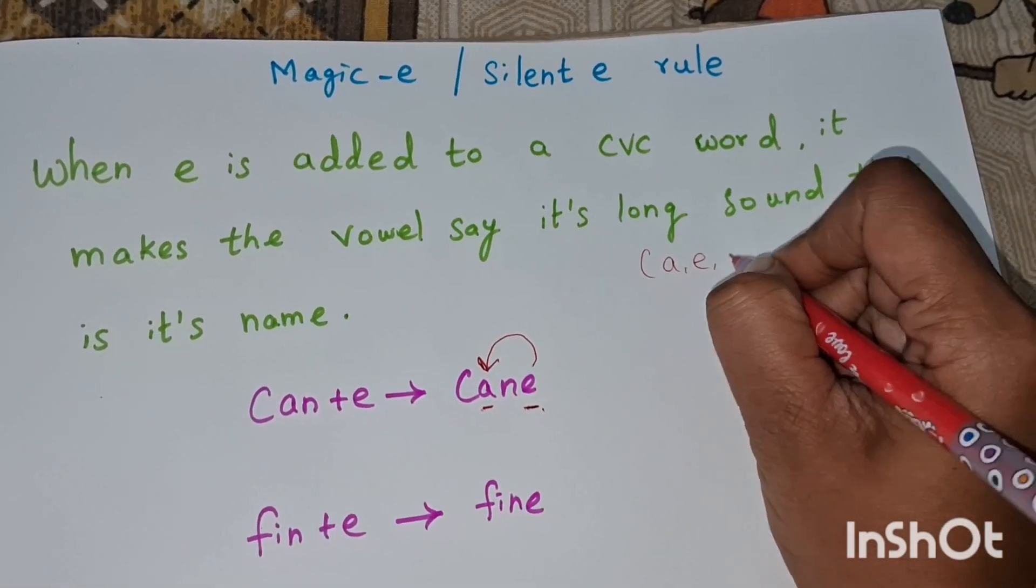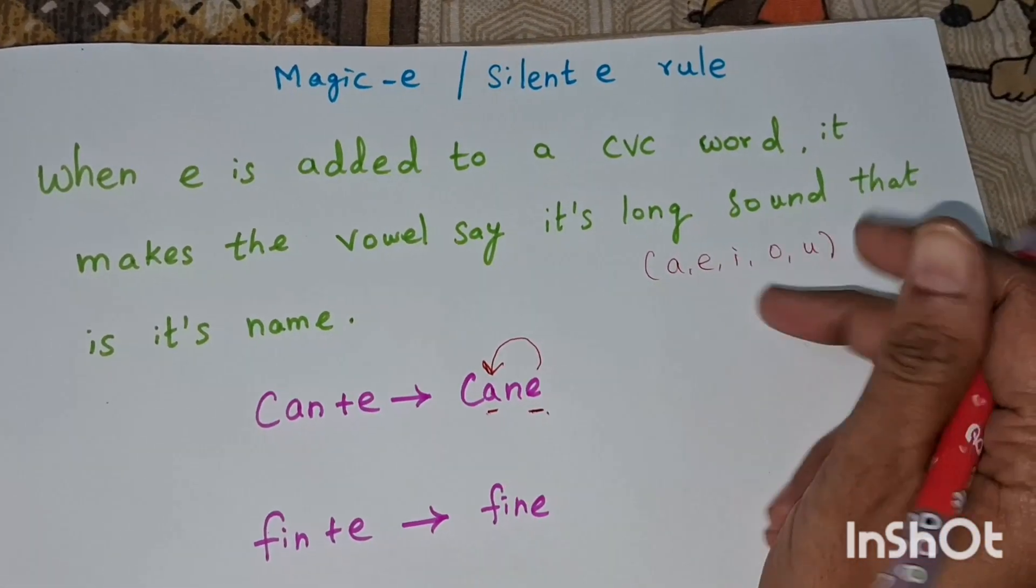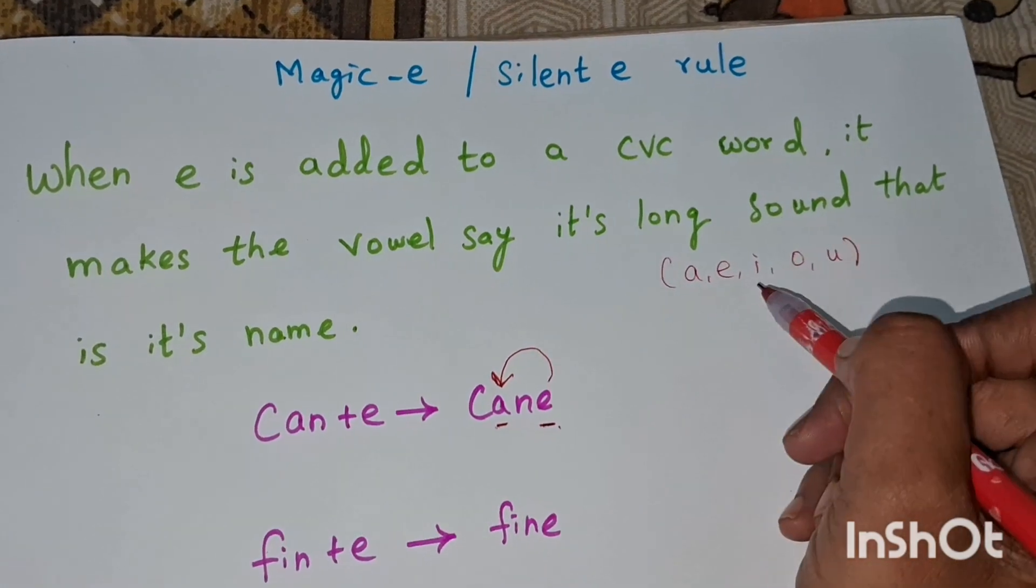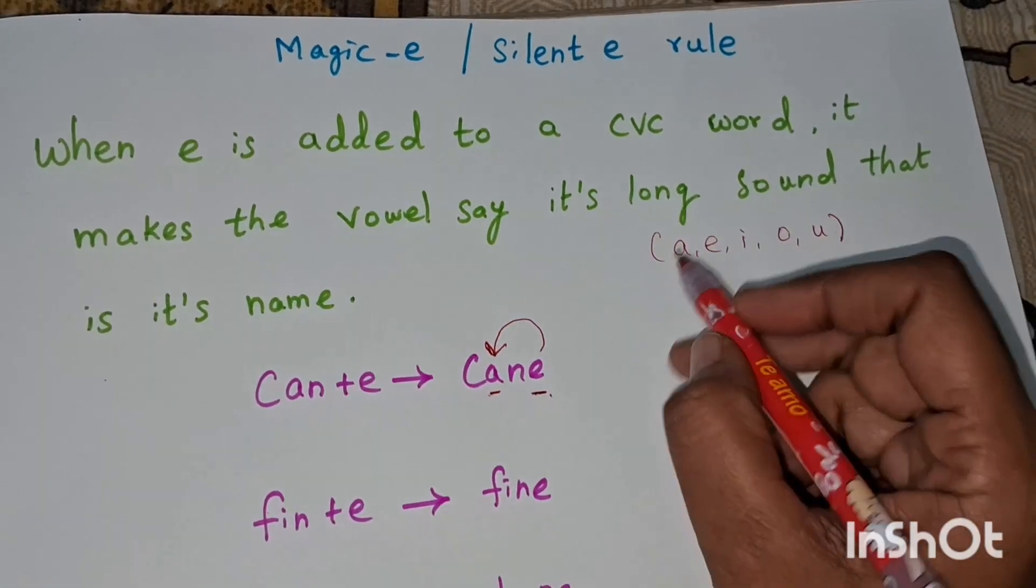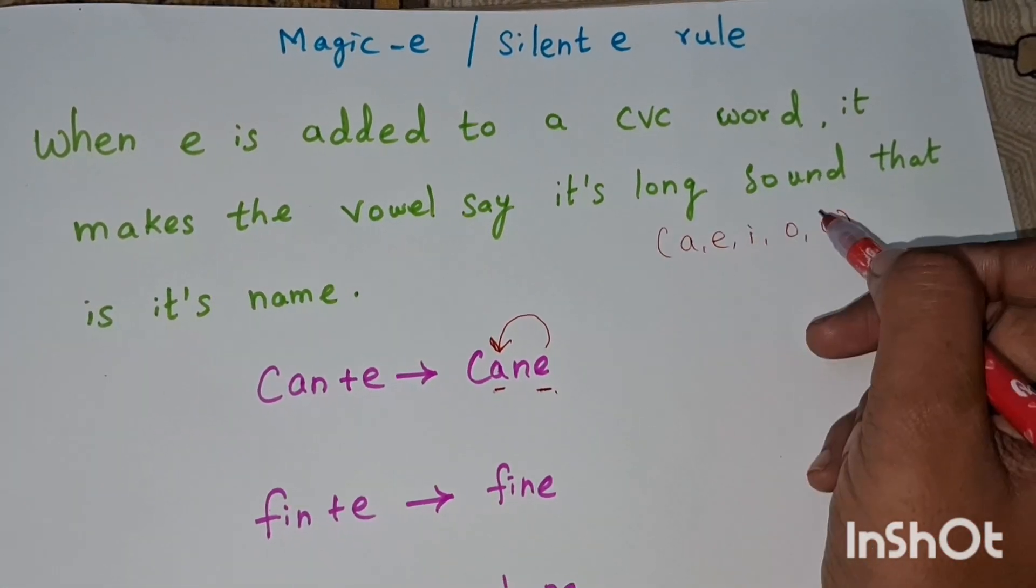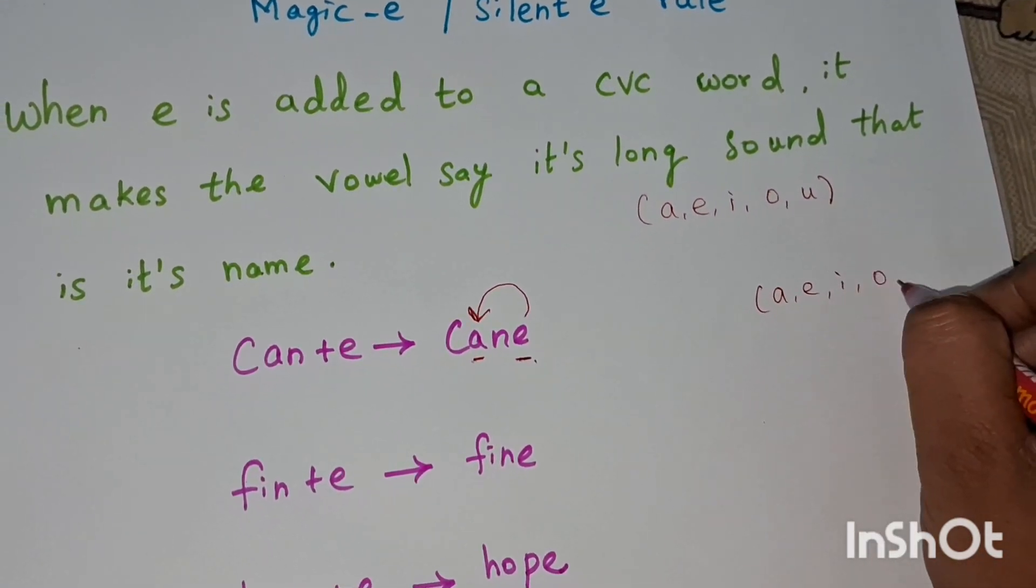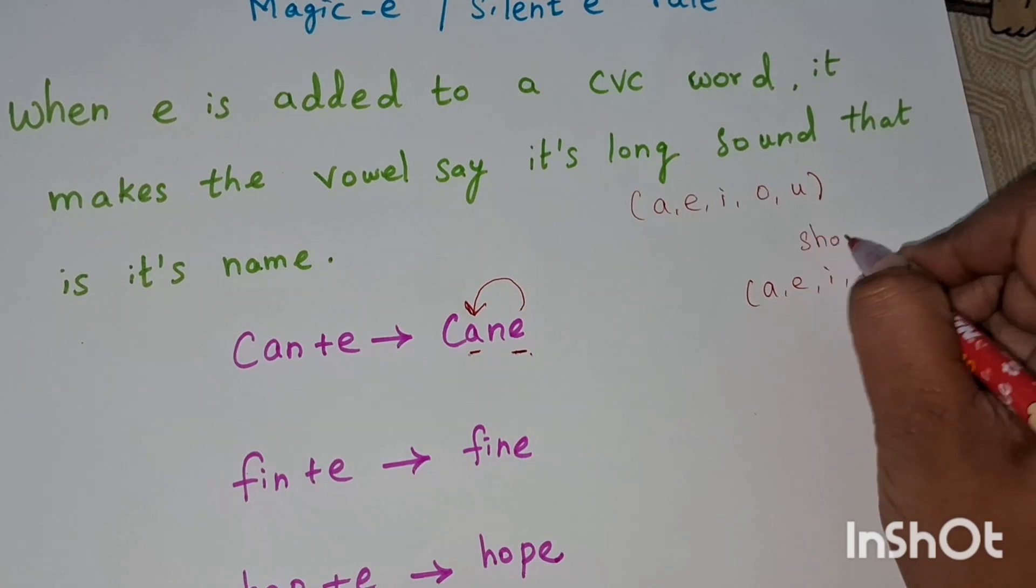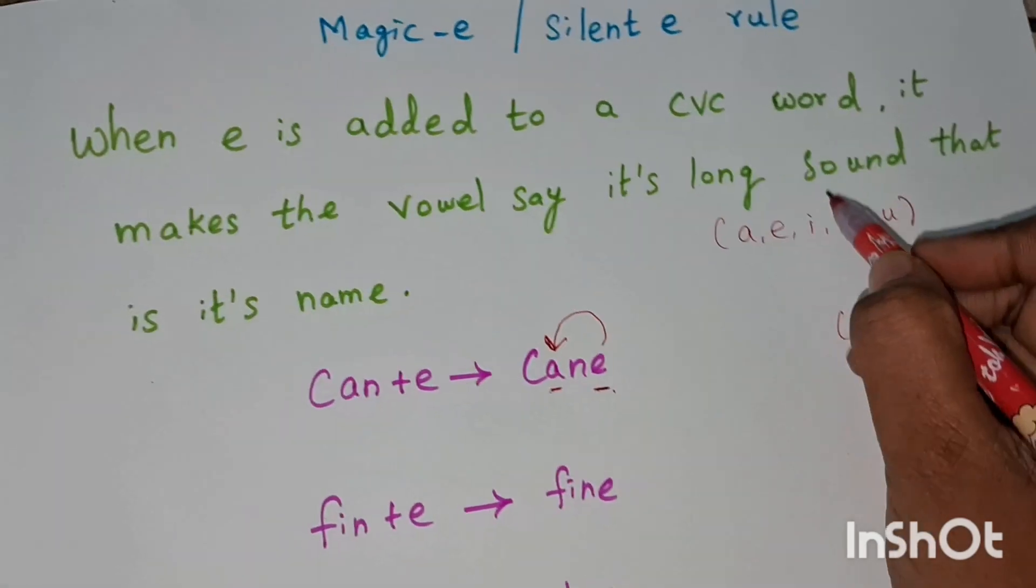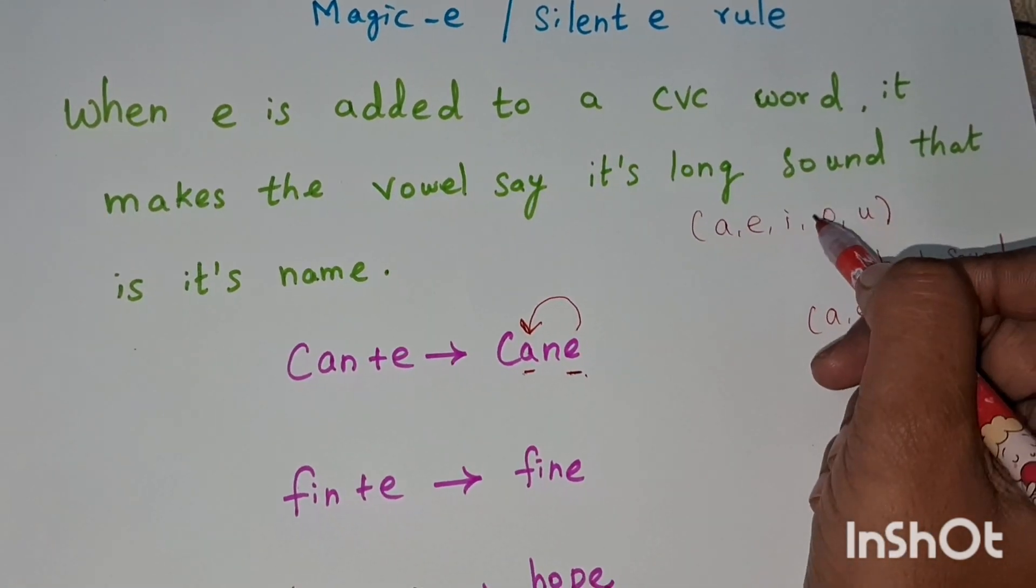Long vowels are A, E, I, O, U. These are all the long vowels. These are all the short sounds. Long sounds are the letters' names: A, E, I, O, U.